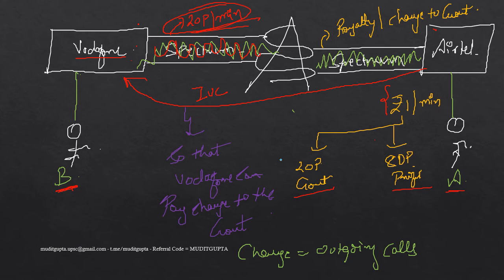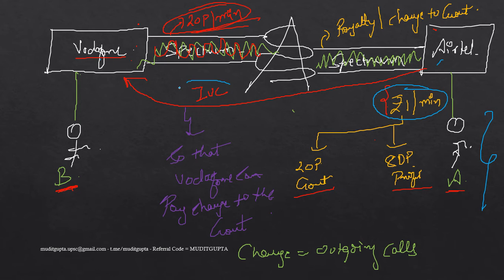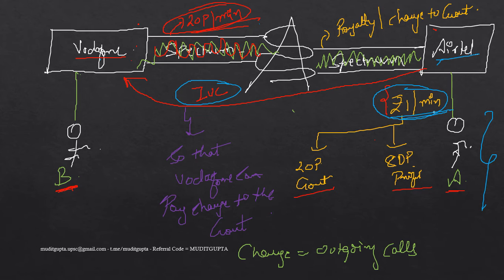So even though the incoming call is free for the end customer, on the outgoing call there is a charge. And out of the outgoing charges, Airtel has to pay Vodafone an Interconnection Usage Charge — because Airtel is earning money partly because Vodafone is providing its spectrum. If Vodafone refused to provide its spectrum, Airtel could not earn anything. So this is the pure economy behind the Interconnection Usage Charge.